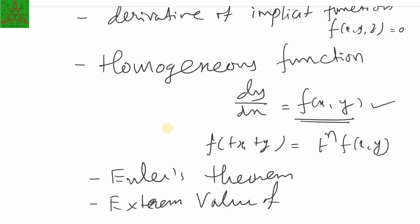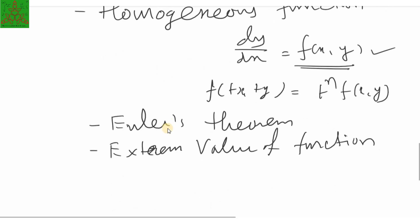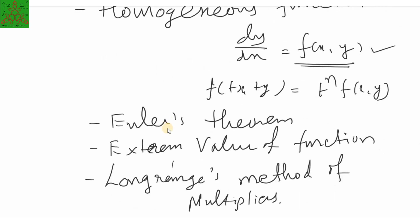Then we are talking about extreme values, which is an application of functions of several variables and of differentiability — basically answering the question of finding maxima and minima. For functions of many variables that give real values, we will calculate the extreme values. One important method for this is called the Lagrange multiplier method, which we will also cover. That concludes Unit 3.